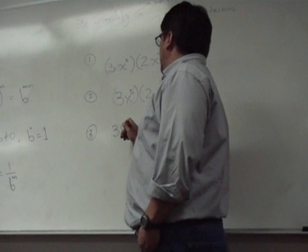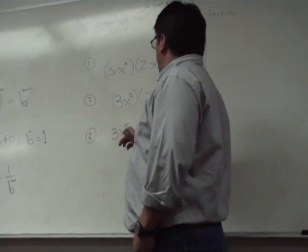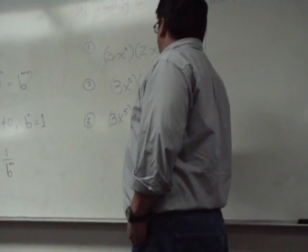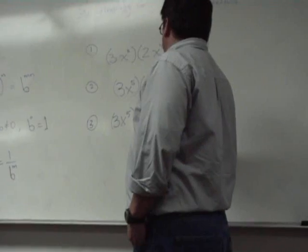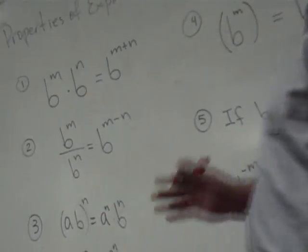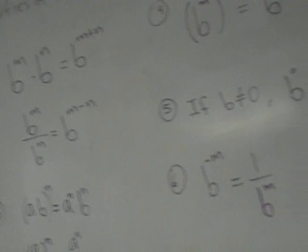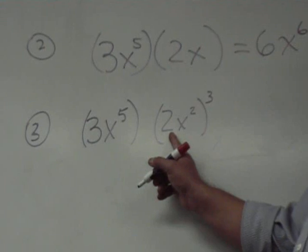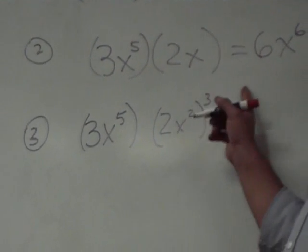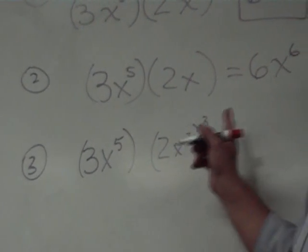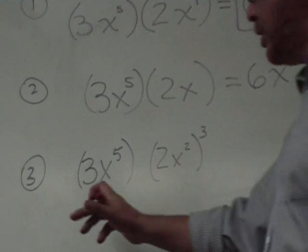3x to the fifth times 2x squared to the third. Now here you have a combination of this property and this property. Let's just follow order of operations, see what you think you should do in what order. Should I multiply 3 times 2 and then x to the fifth times x to the second and then do the exponent? No. Before multiplication, order of operations is what do we do? Exponent. So I got to take care of that exponent.